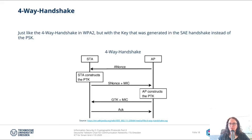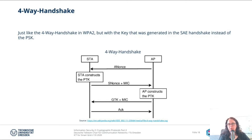The unique session key is then taken and goes into the four-way handshake. The four-way handshake is the same as in WPA2, but in WPA2 we took the pre-shared key — the PMK derived from the pre-shared key — and put it into the four-way handshake. Now we take the session key derived from the SAE protocol and put it into the four-way handshake instead.